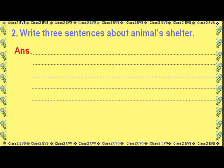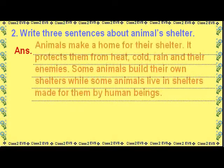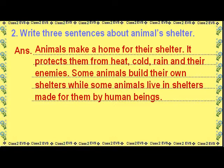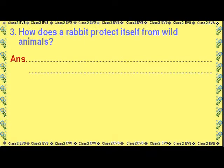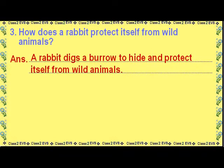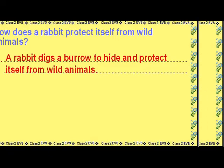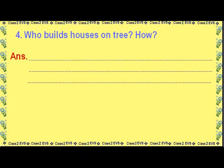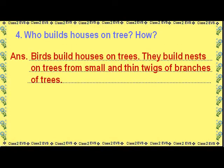Write three sentences about animals' shelter: Animals make a home for their shelter. It protects them from heat, cold, rain, and their enemies. Some animals build their own shelters while some live in shelters made by human beings. How does a rabbit protect itself from wild animals? A rabbit digs a burrow to hide and protect itself. Who builds houses on trees? Birds build nests on trees from small and thin twigs of branches.